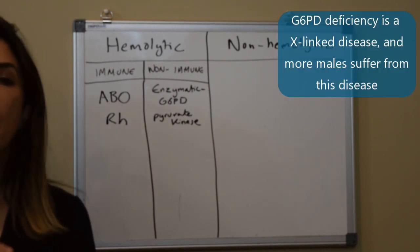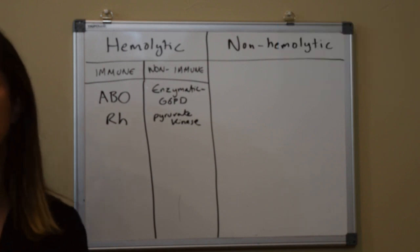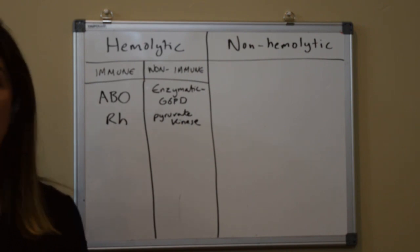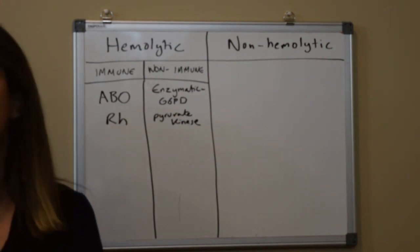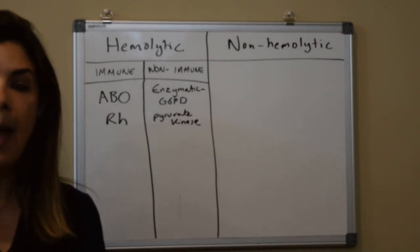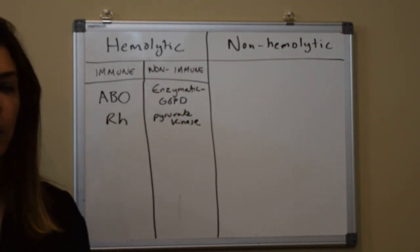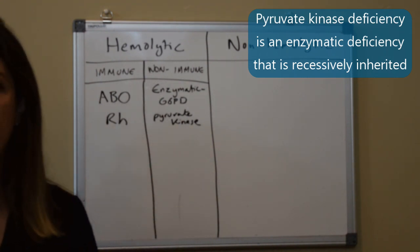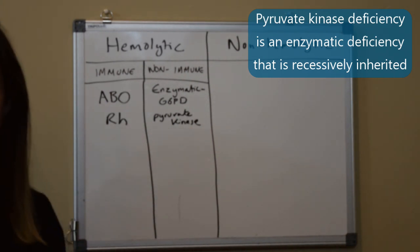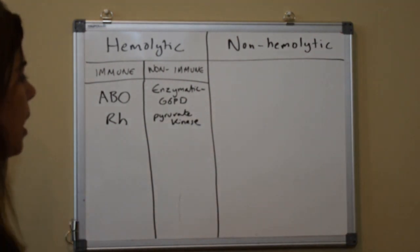G6PD is an X-linked disease, which means boys suffer from it far more than girls — a lot of unusual things would have to happen for a girl to be diagnosed with it, since she has two X chromosomes. So if you have a male from a Mediterranean country with an extremely high bilirubin that doesn't seem to be immune, one of the things to think about is G6PD deficiency. Pyruvate kinase deficiency is also an enzymatic deficiency, inherited in a recessive way, and is another condition to consider.